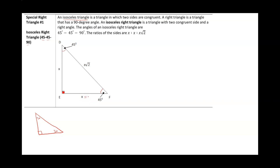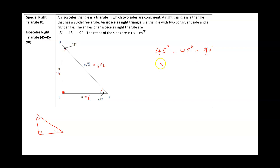When that happens, we have a fixed ratio of the three sides. Opposite each 45-degree angle is X, and the hypotenuse opposite 90 degrees is X times radical 2. For example, if one side is 6, the other side is also 6, and the hypotenuse is 6 radical 2.